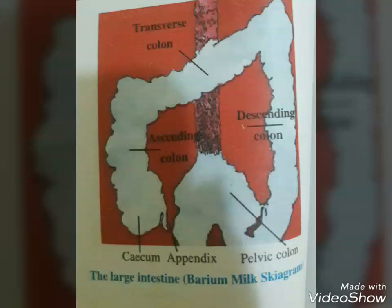The bile secreted by the hepatic cells passes through the hepatic ducts and is stored and concentrated in a thin muscular sac called the gallbladder. The duct of the gallbladder, or cystic duct, along with the hepatic ducts from the liver, forms the common bile duct. The bile duct and the pancreatic duct open together into the duodenum as the common hepatopancreatic duct, which is guarded by the sphincter of Oddi.